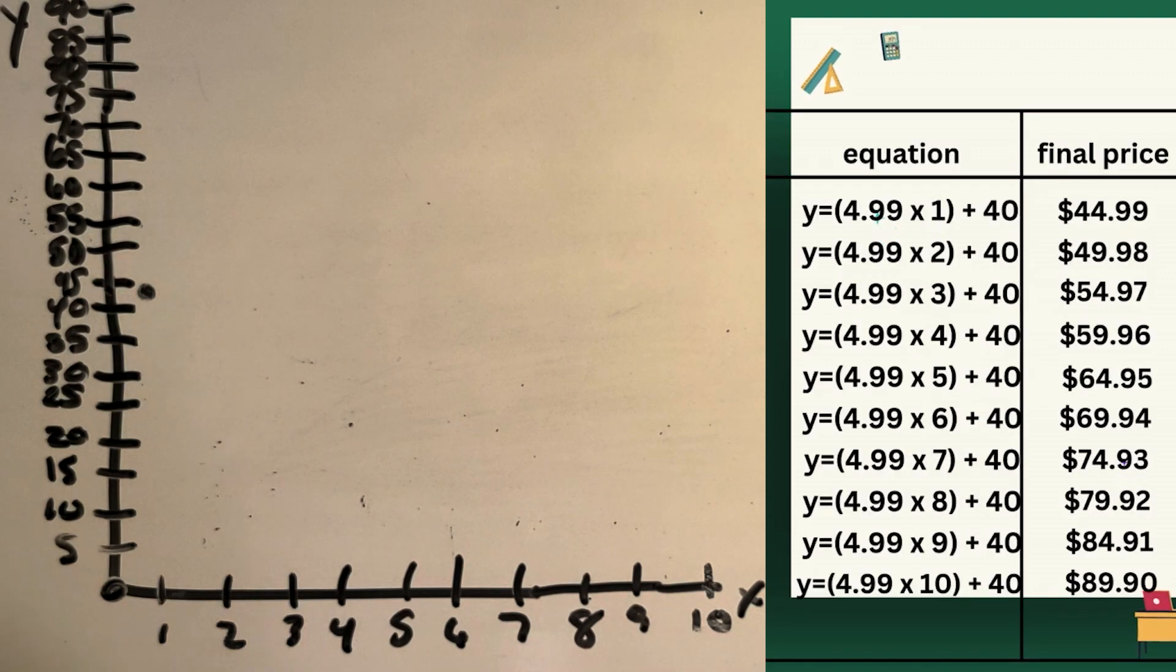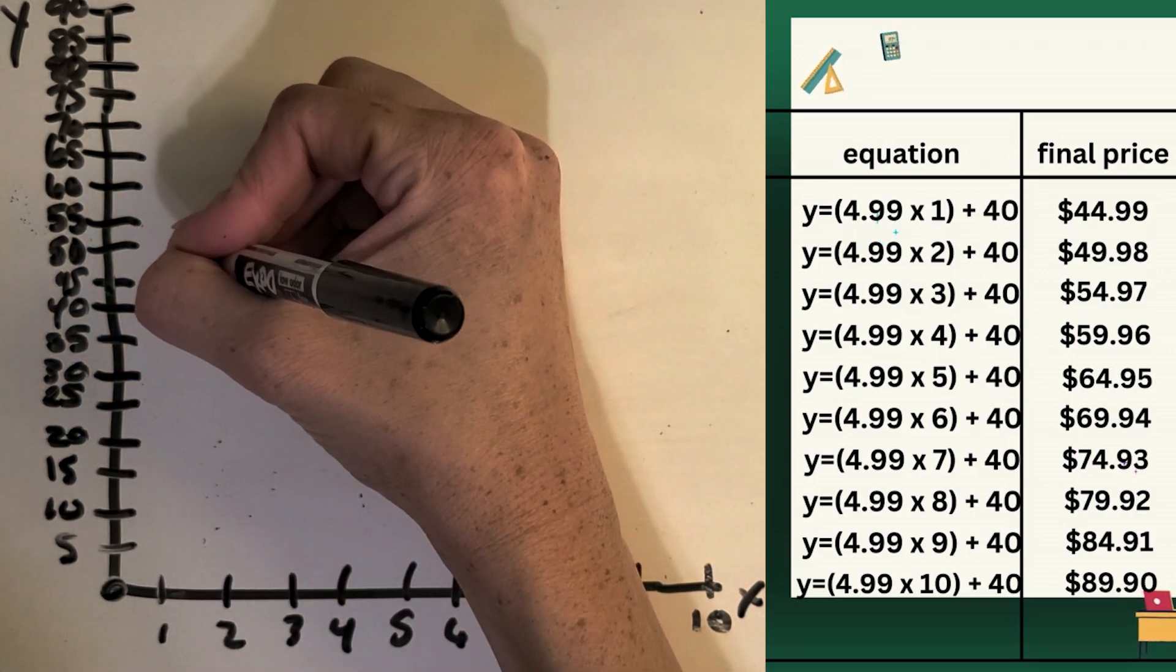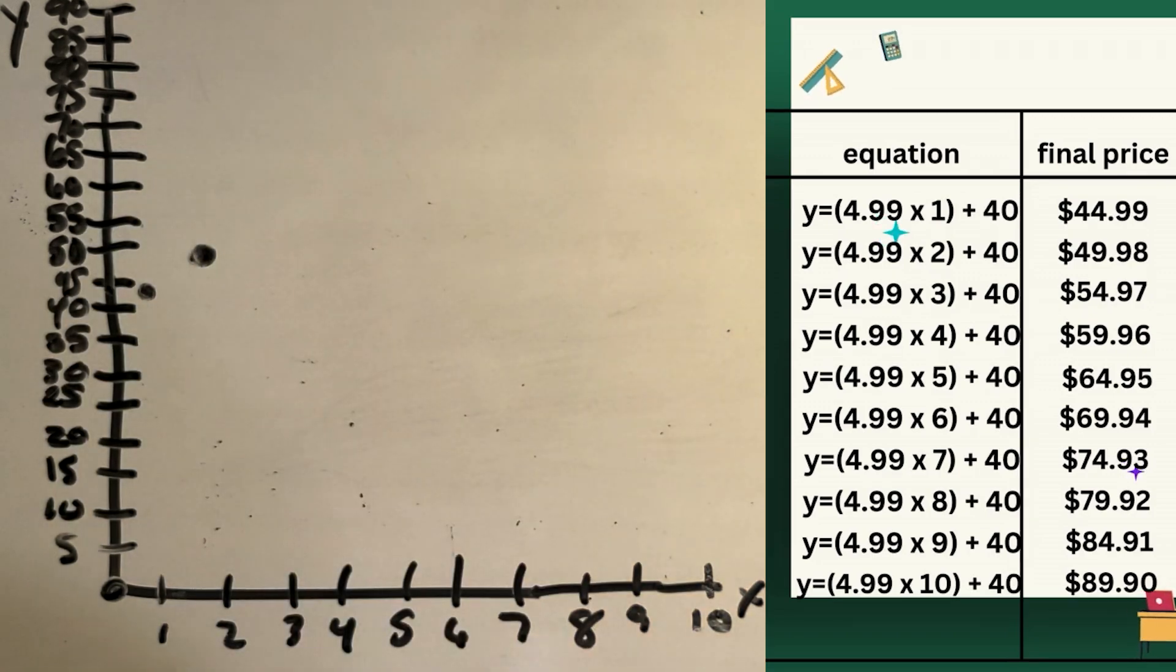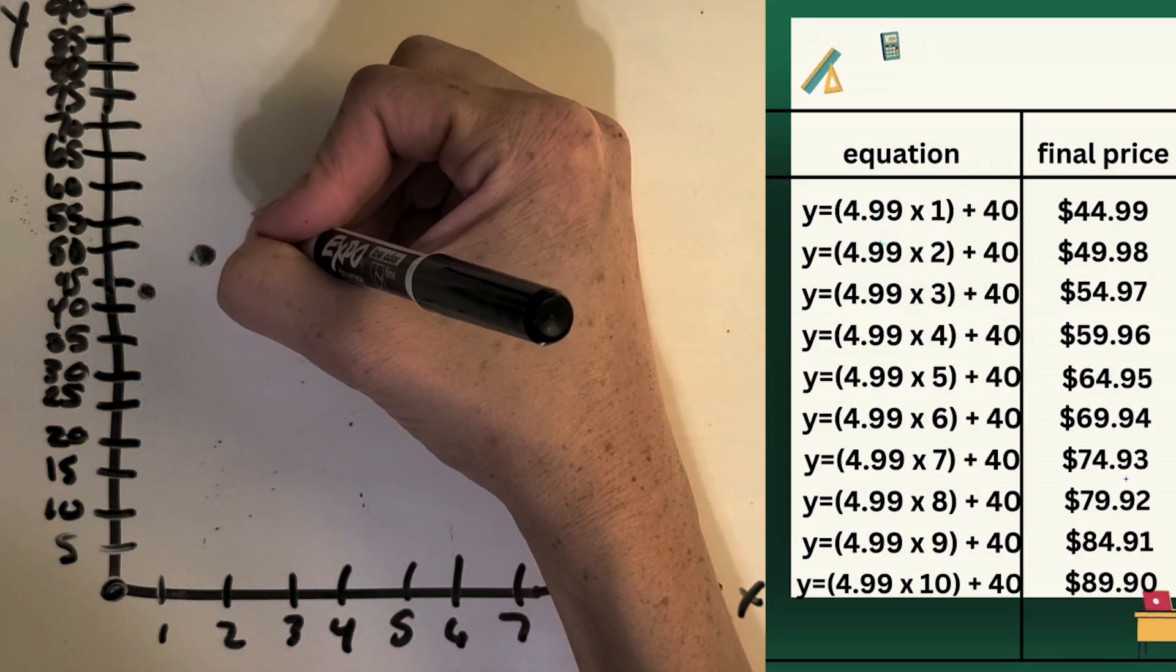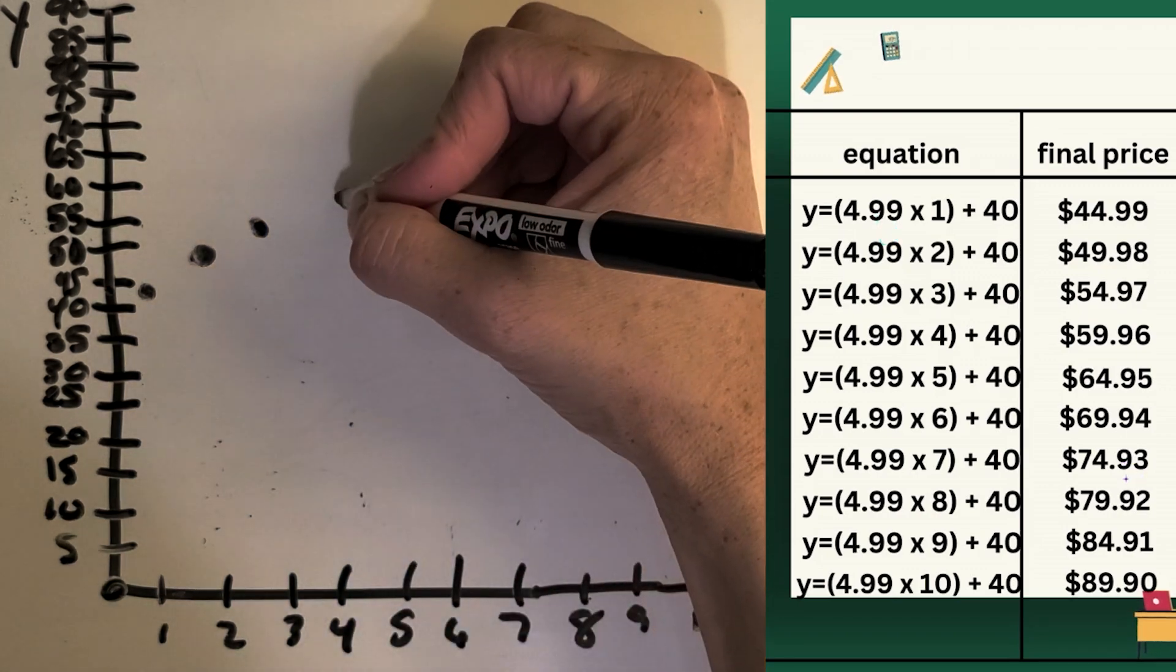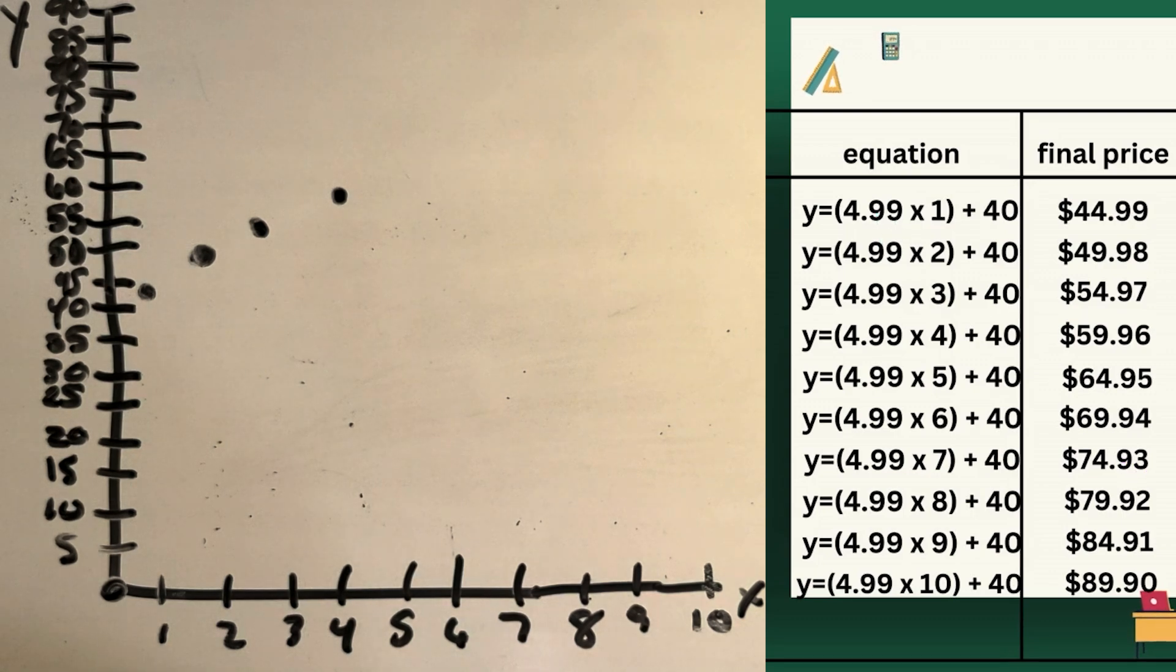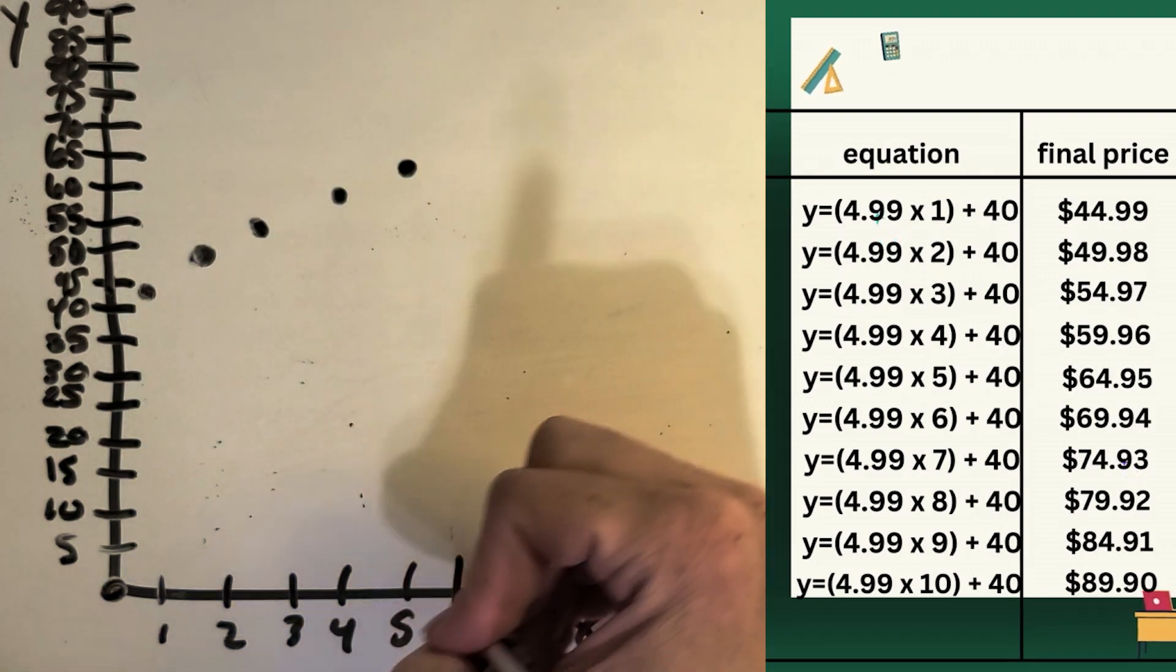Then we can do each of the amounts that you found. So two DLCs, how much did that cost? Yeah, really close to $50, right? So $49.98. Okay, three DLCs were $54.97. Okay, four DLCs were $59.96. Okay, and we can just keep going based on the equations that we built.